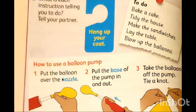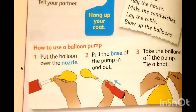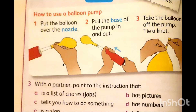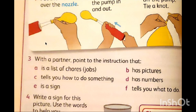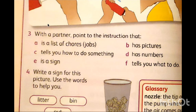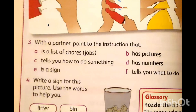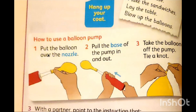Now, how to use a balloon pump. Number one: put the balloon over the nozzle. What is the meaning of nozzle? It's the tube — a balloon pump is like a tube, and it ends with a nozzle. So a nozzle is the tip of the pump where the air comes out.